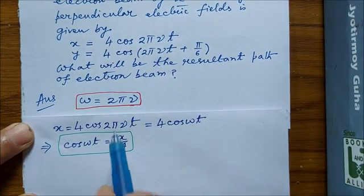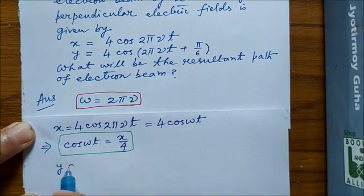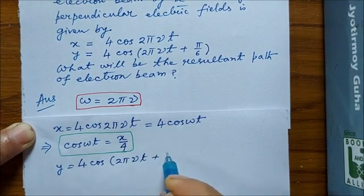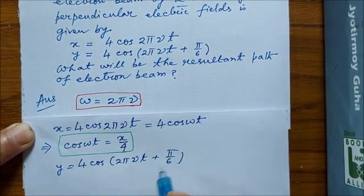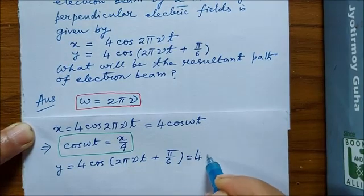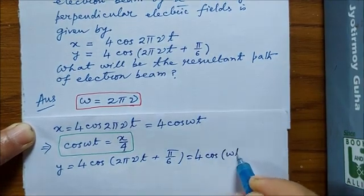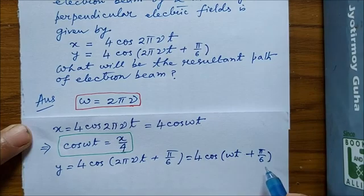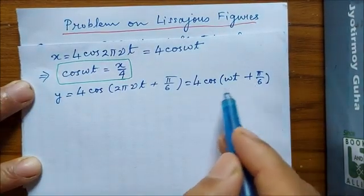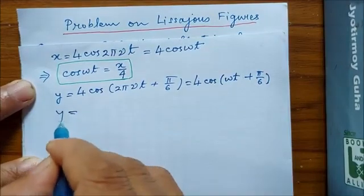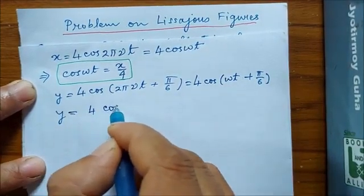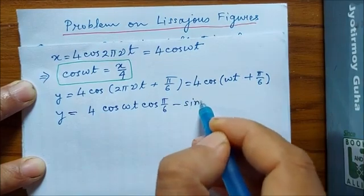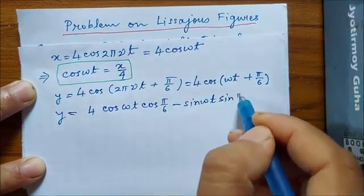And from here, the value of cos ωt can be obtained to be x by 4, and we shall use it later. The next equation is y equal to 4 cosine ωt plus π by 6. We can expand this part to get 4 cos ωt cos π by 6 minus sin ωt sin π by 6.